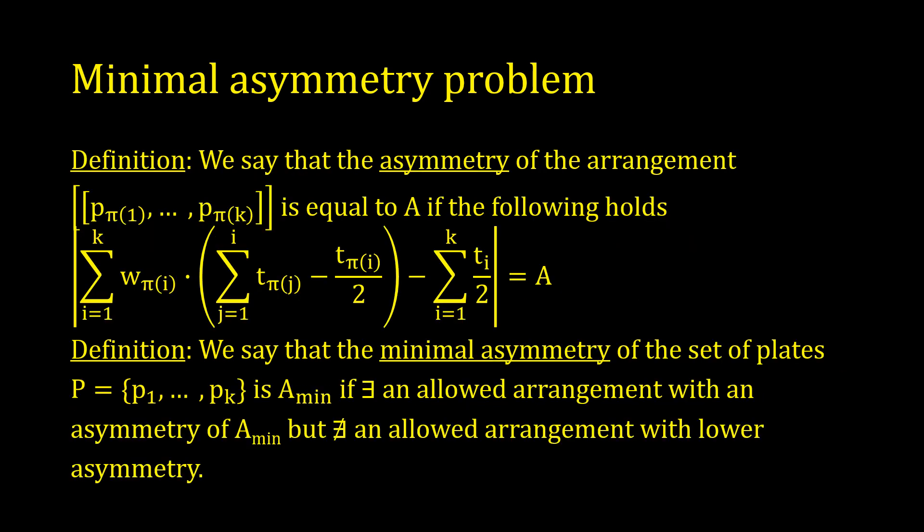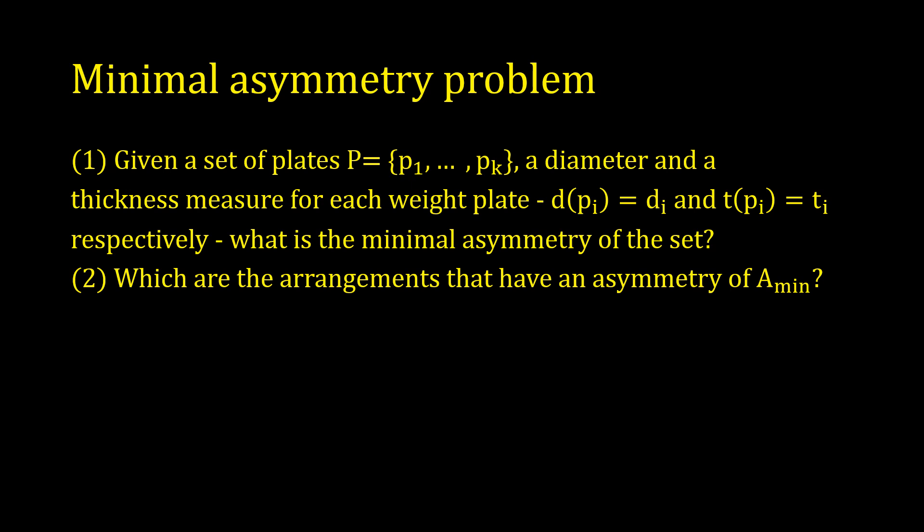Let's define the asymmetry as the distance between the geometric center and the center of mass of the weight plates. The geometric center is simply the half sum of thicknesses. In the calculation of the center of mass, I've used the leftmost part of the first plate in the arrangement as a reference point. After those definitions, we can finally state the problem.